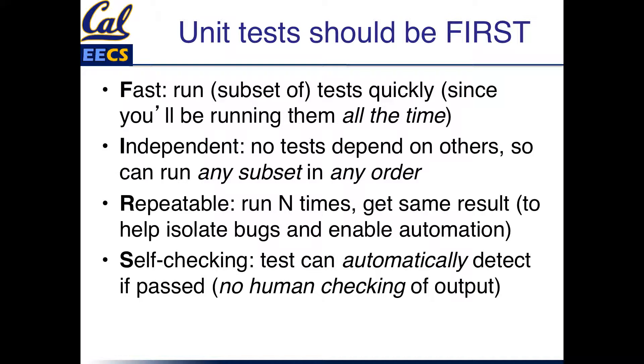Self-checking means that no human beings should have to examine the output of the test in order to figure out whether they passed or not. The test should have enough information that after it's finished executing, it knows whether the right thing happened. We care about this for the same reason we care about any type of automation — when we automate our test suites and collect results, it allows us to have a repeatable task that can always be running in the background.